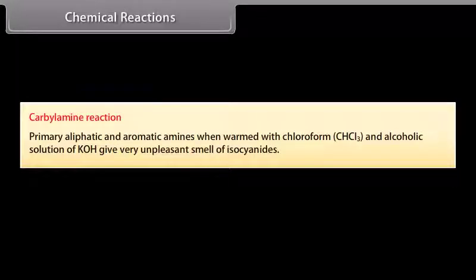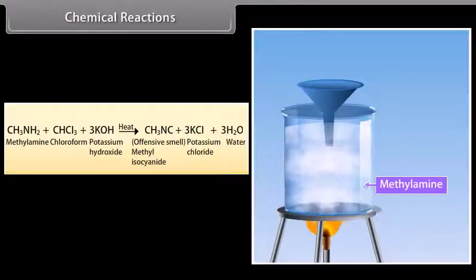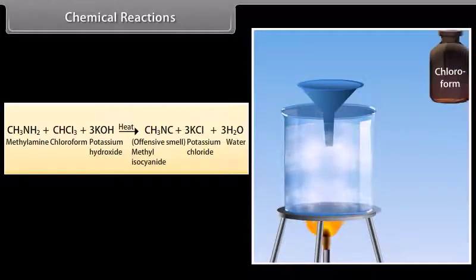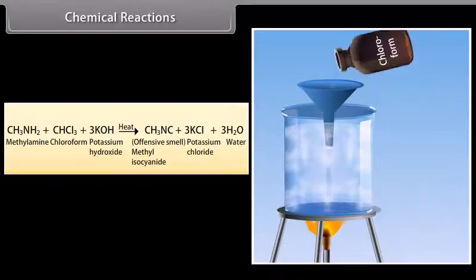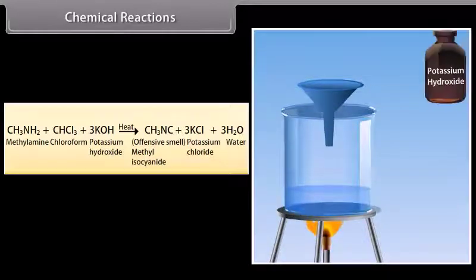Carbylamine reaction: Primary aliphatic and aromatic amines, when warmed with chloroform and an alcoholic solution of potassium hydroxide, give very unpleasant-smelling isocyanides. For example, chloroform and alcoholic KOH react with methylamine to form methyl isocyanide, potassium chloride, and water.